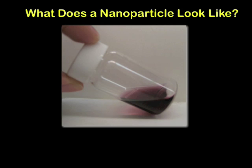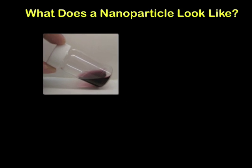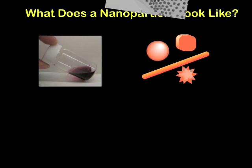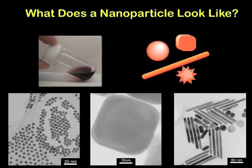The color of a gold nanoparticle solution is directly related to the size and shape of the nanoparticle. Gold nanoparticles may be synthesized in many different shapes, including spherical, cubic, rod, and even stars. These particles can be directly imaged using special tools, particularly an electron microscope, which uses electrons to see very small objects. The micrographs shown correspond to spherical, cube, and rod-shaped gold particles.